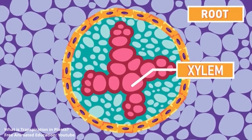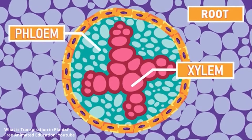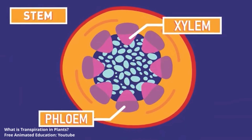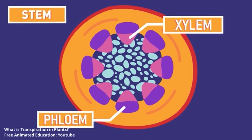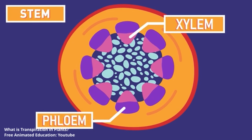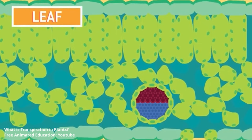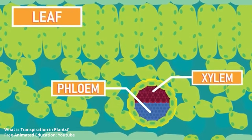You then have phloem, which is essentially the vascular part of the plant's vascular system. It is actively transported movement. You can think of sap moving down a plant and into the areas that the plant requires nutrients actively moved around. So xylem moves things up, and phloem is vascular tissue that pushes nutrients around the plant.